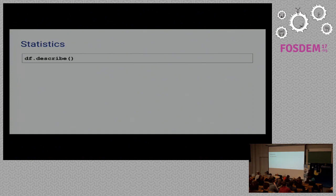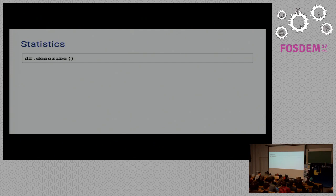That was about manipulating and fetching rows, but Pandas isn't just for that. It's also for statistical operations. For example, the describe method gives you a lot of useful statistical information about your data — like average, minimum, maximum, first quartile, second and third quartile, and more.